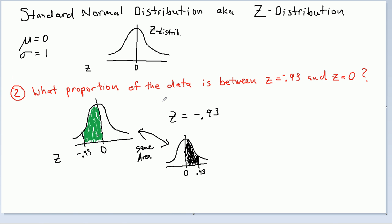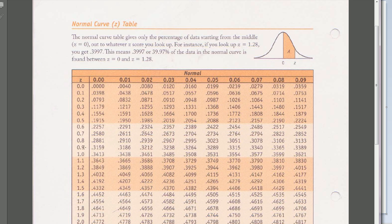So knowing that information, we can go to the table and look up positive 0.93. So here's Z equals 0.9, and here's 3, so there's Z equals 0.93. We kind of square in, and we get exactly the same proportion or percentage that we got last time.